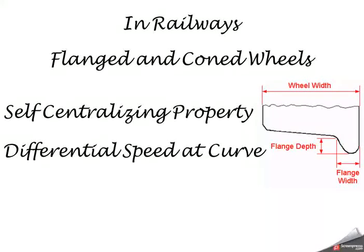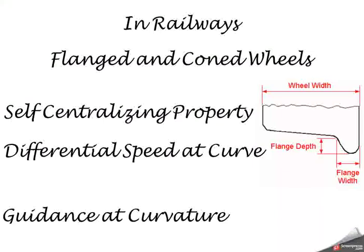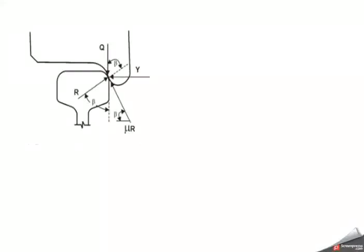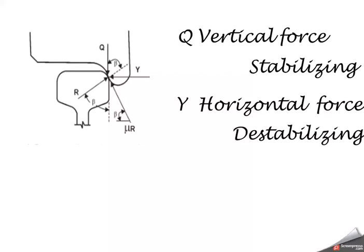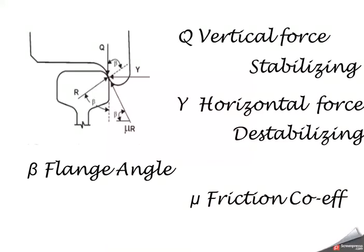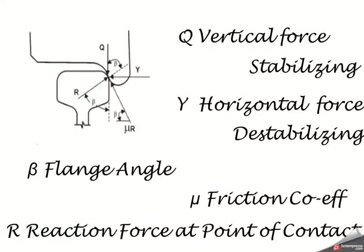Flange provides necessary guidance at curvature. At flange tip contact, there is vertical force Q which is also stabilizing force. There is horizontal force Y which is destabilizing force. Beta is the flange angle. Mu is coefficient of friction between flange and rail. R is the reaction force at point of flange tip contact.